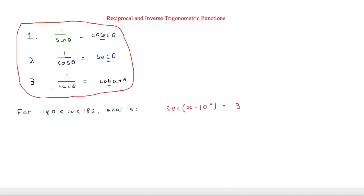So let's put this into a question. The question says: for x between minus 180 degrees and 180 degrees, what is sec(x minus 10 degrees) equal to 3? First of all we're going to transform sec into one over cos theta, so what we get is one over cos(x minus 10) equals 3.